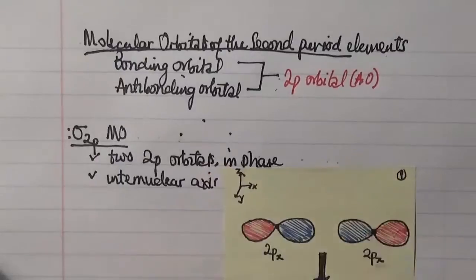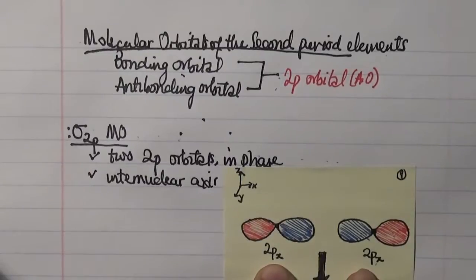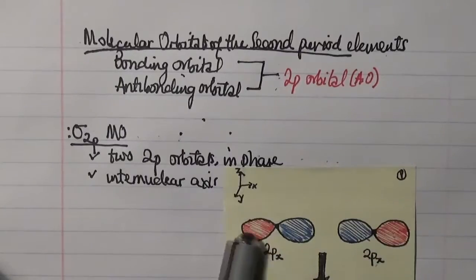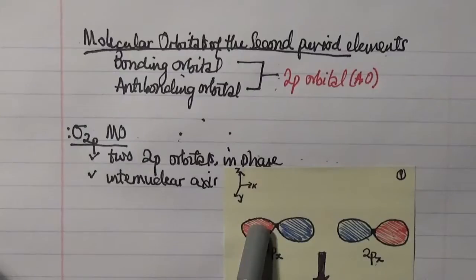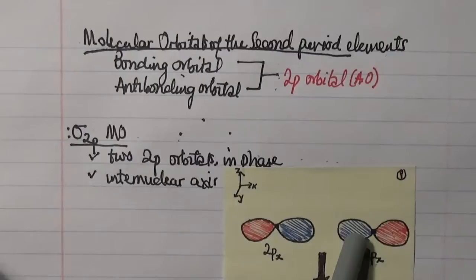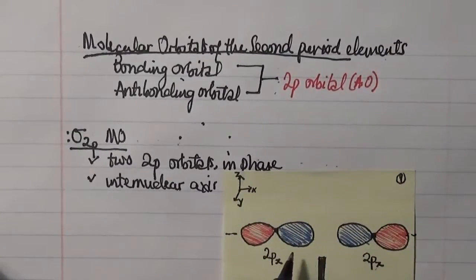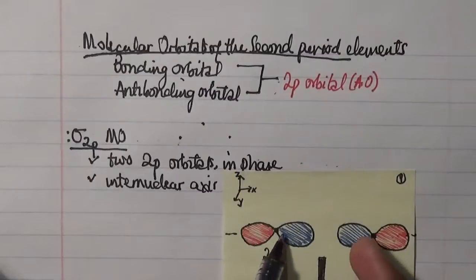Labeling the axes as z, y, and x, we look at the 2px atomic orbitals of two atoms as they come together. Note the shading: one lobe is blue and the other is red for each atom. As they approach along the internuclear axis, both orbitals are coming together in phase — blue with blue, or positive with positive — not negative and positive.